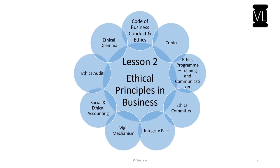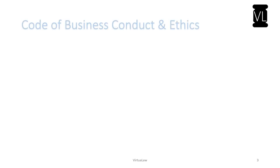Code of business conduct and ethics: a company can have either a code of business conduct and a code of business ethics separately, or a combined code containing provisions on both. The code is essentially a compilation of all the rules, principles, techniques, and values which a company wants its employees to comply with.